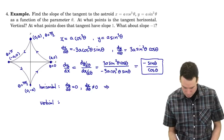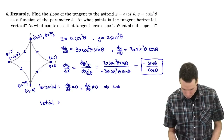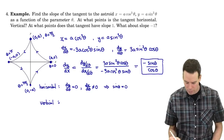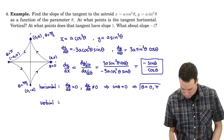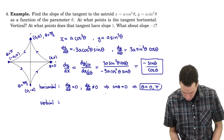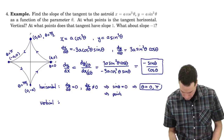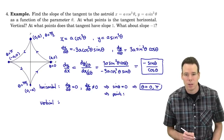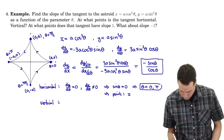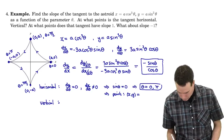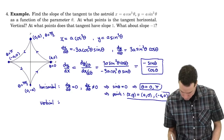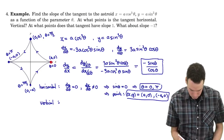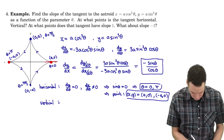So sine of theta has to be 0, and sine of theta is 0 when theta is 0 and π. Those are the theta values where the tangent line is horizontal. Plugging each back into the parametrization: at theta = 0 we get (a, 0), and at theta = π we get (−a, 0). Those are the points where we draw horizontal tangent line segments.